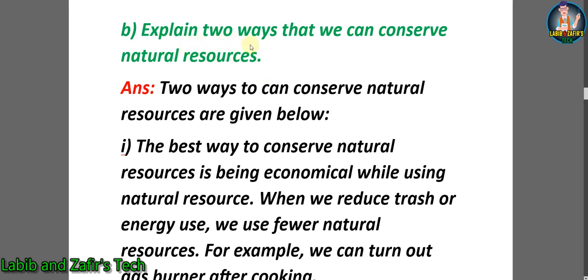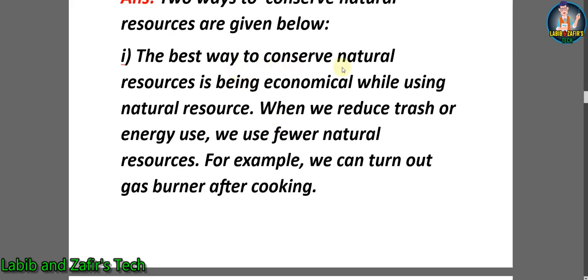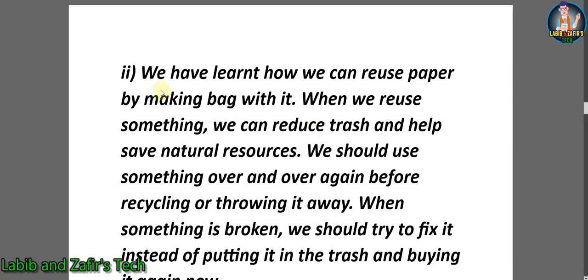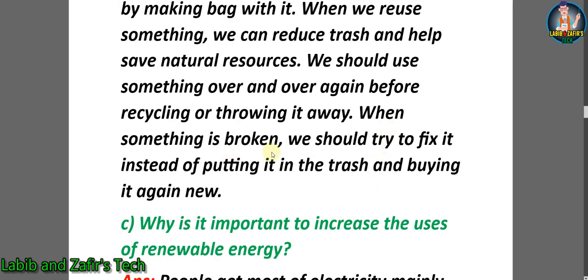b) Explain two ways that we can conserve natural resources. Answer: Two ways to conserve natural resources are — number 1: the best way is being economical while using natural resources; when we reduce trash or energy use, we use fewer natural resources. For example, we can turn off the gas burner after cooking. Number 2: We can reuse paper by making bags with it. When we reuse something, we reduce trash and help save natural resources. We should use something over and over again before recycling or throwing it away. When something is broken, we should try to fix it instead of buying a new one.